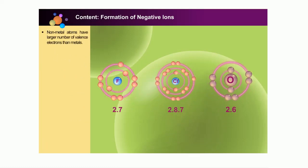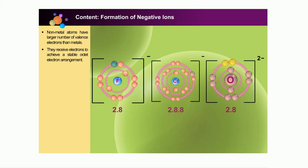Non-metal atoms have a larger number of valence electrons than metals. They readily receive electrons in order to achieve a stable valence electron arrangement — the octet. In predicting the number of charges formed, we still use the octet rule. By receiving the electrons, they gain a net negative charge and become negative ions.